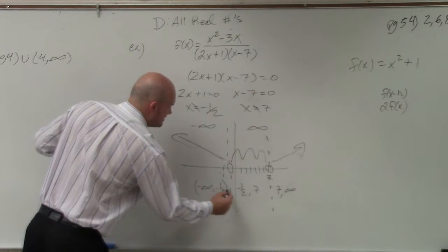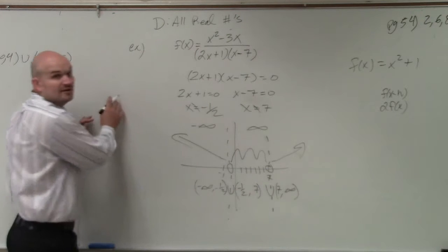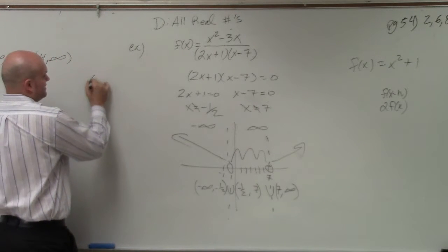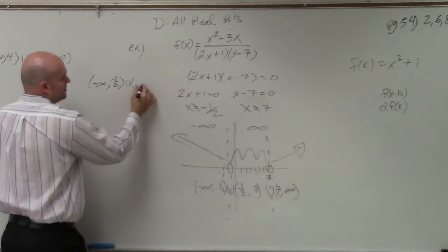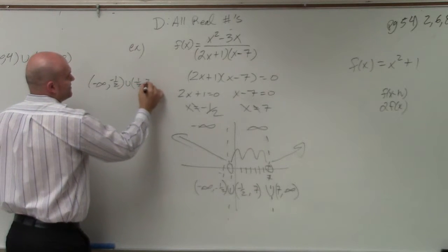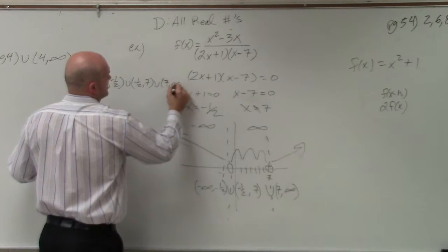Then you just put these in, union. Put them in, union. So if I can write over here, you could write it like this: negative infinity, negative 1 half, union, negative 1 half, comma 7, union, 7 comma infinity.